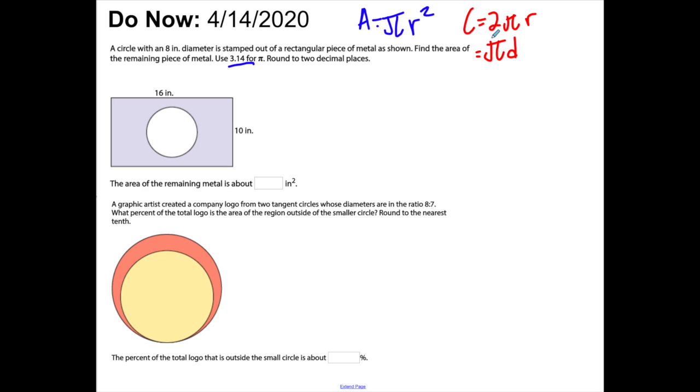The second problem: a graphic artist created a company logo from two tangent circles whose diameters are in the ratio 8 to 7. What percent of the total logo is the area of the region outside the smaller circle? Round to the nearest tenth.